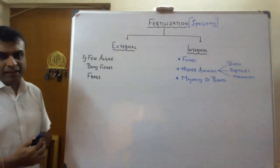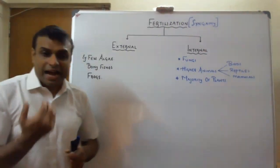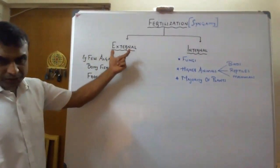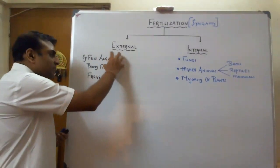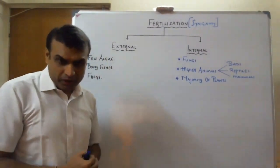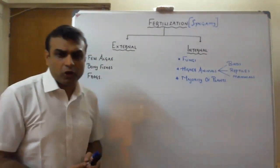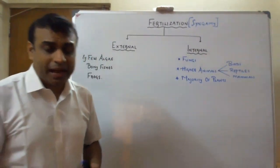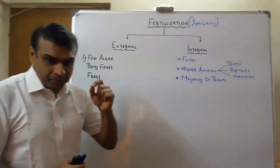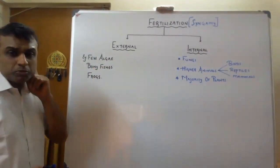Green algae also perform external fertilization. In external fertilization, the male and female gametes are near equal in size — this is called isogamy, which is normally observed in green algae. It is also observed in bony fishes and frogs. The male and female gametes are released into the external medium, like water, and fertilization occurs outside the body.